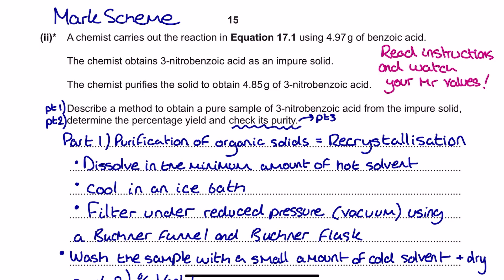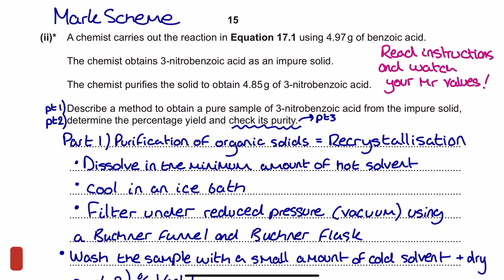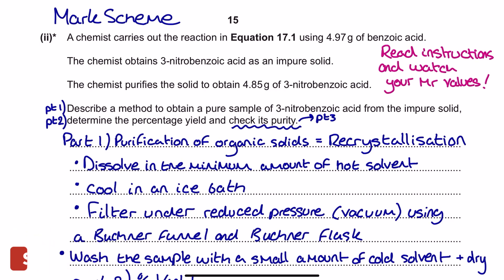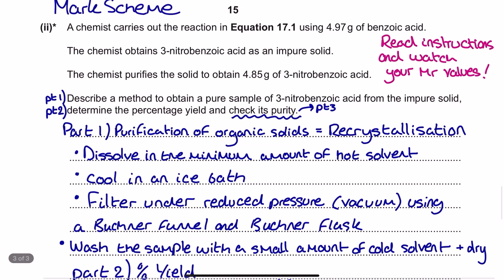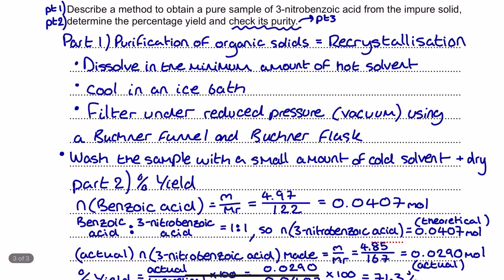Here is my mark scheme with three different parts to the answer. Please read your instructions carefully with level of response exam questions and separate them into different stages to keep track of information. Particularly with percentage yield calculations, keep an eye on your relative molecular masses — your Mr values or molar masses — as it's very easy to accidentally use the benzoic acid molar mass when you meant to use the 3-nitrobenzoic acid molar mass.